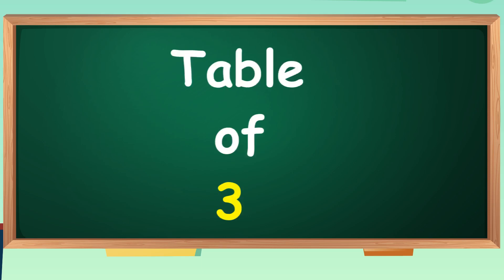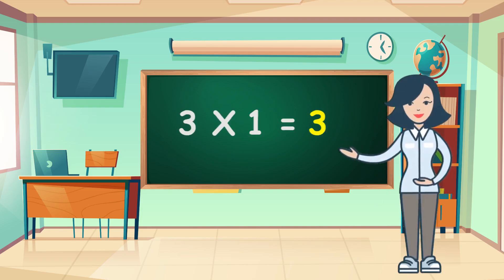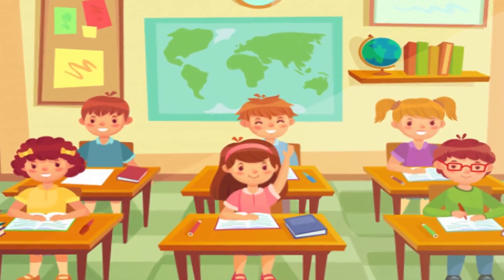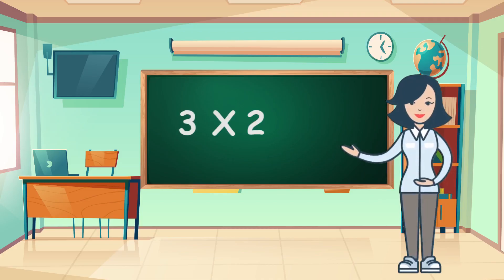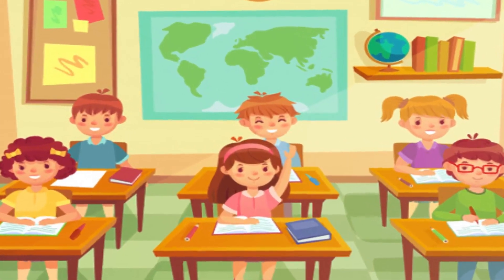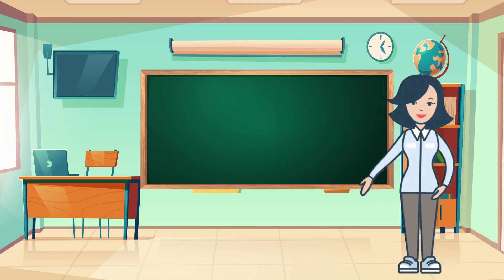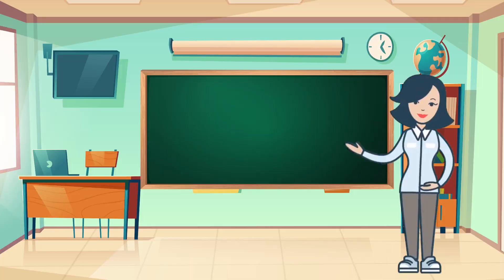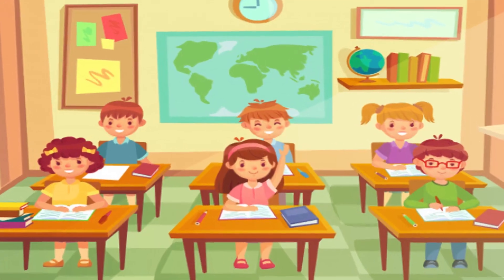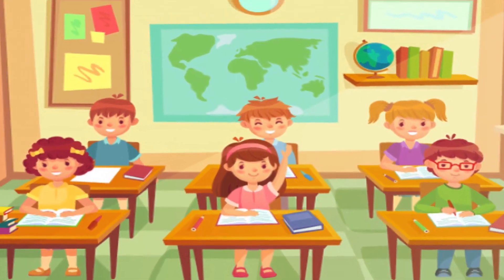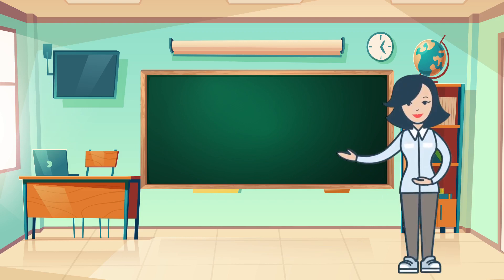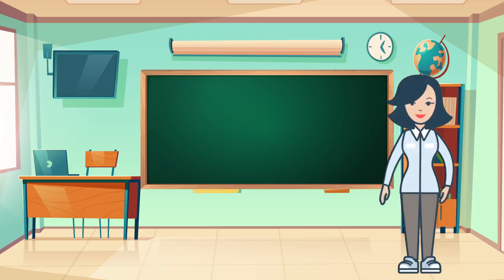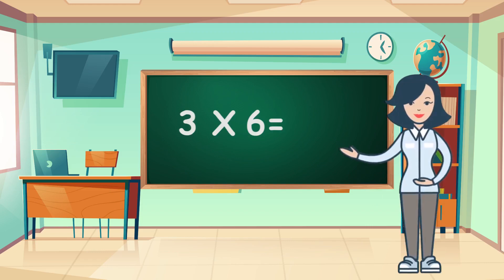Table of Three. Three ones are three. Three ones are three. Three twos are six. Three twos are six. Three threes are nine. Three fours are twelve. Three fives are fifteen. Three sixes are eighteen.